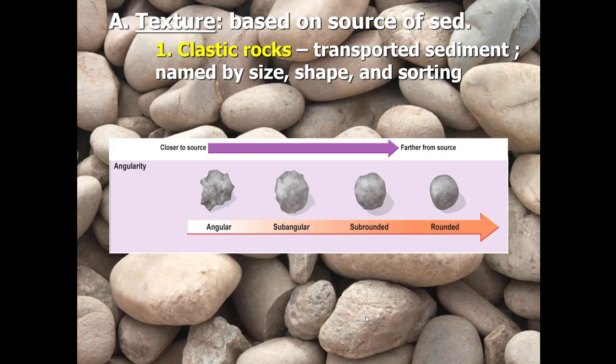The source of most sediment in sedimentary rocks is ultimately the weathering of mountains. As particles break off of mountains through weathering processes or mass wasting events like landslides, the particles closest to the source area are typically angular in shape — they have jagged edges and are irregularly shaped.